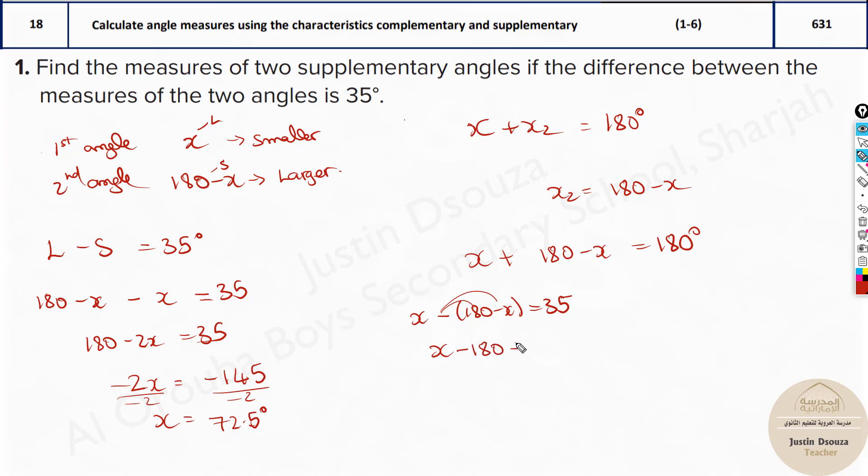Here if you see now, it'll be x minus 180 plus x equals 35. Now we will have x plus x, that is 2x equals 35 plus 180. And we will have 2x equals 215. Now divide both sides by 2. You will have 107.5.